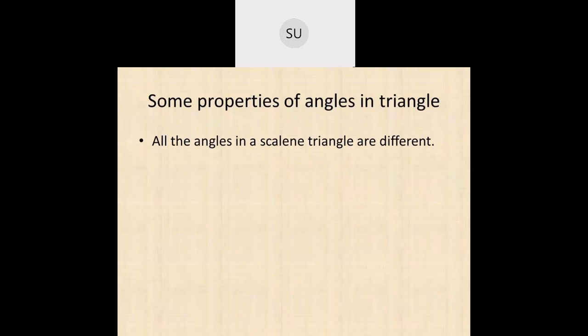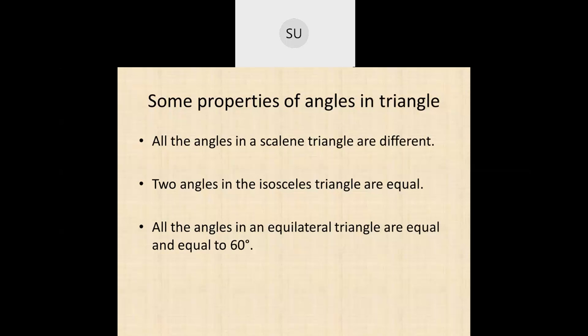A few more properties of triangles: in a scalene triangle all sides and all angles are different. In an isosceles triangle, two angles are equal. In an equilateral triangle, all angles are equal and each is 60 degrees. And importantly, in any triangle — whether scalene, isosceles, or equilateral — the sum of all three angles is always 180 degrees.